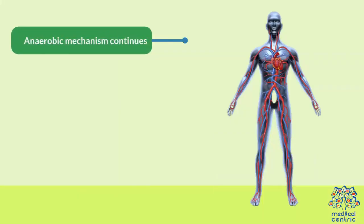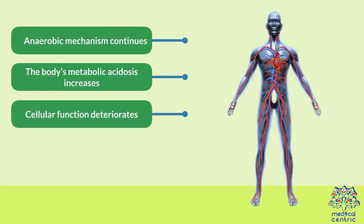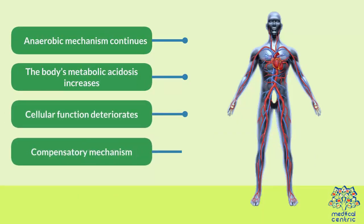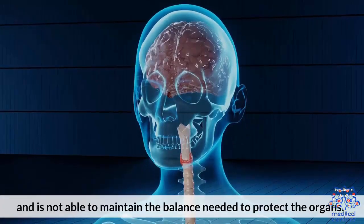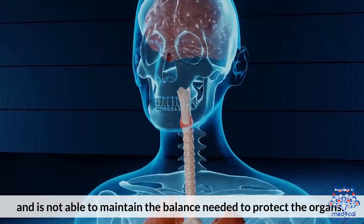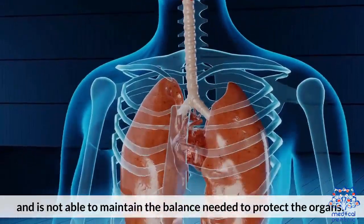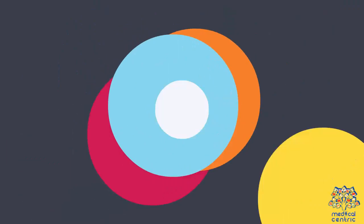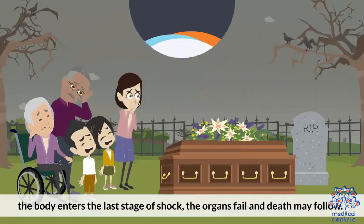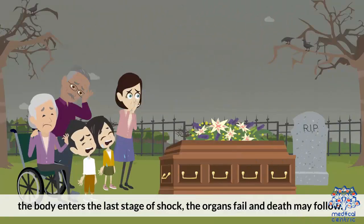As anaerobic metabolism continues, the body's metabolic acidosis increases, cellular function deteriorates, and the compensatory mechanism begins to fail and is not able to maintain the balance needed to protect the organs. During the refractory stage, the body enters the last stage of shock, the organs fail, and death may follow.